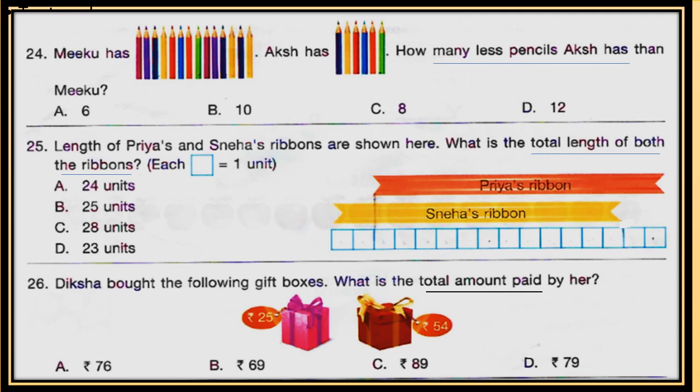Next question: the lengths of Priya's and Sneha's ribbons are shown here. What is the total length of both ribbons? The length of each ribbon is given, and each square is 1 unit. Calculate the length of Priya's ribbon and Sneha's ribbon, then find the total length. Check your answers at the end of the video.